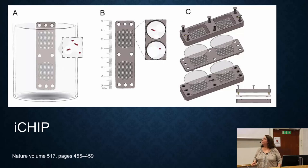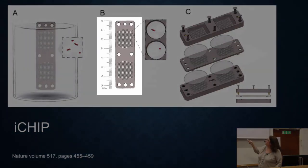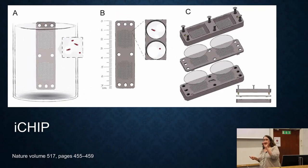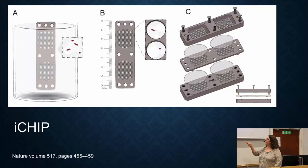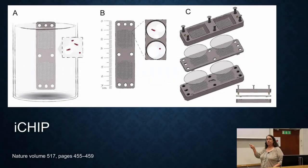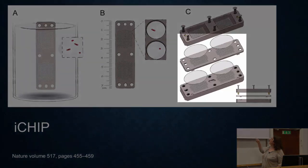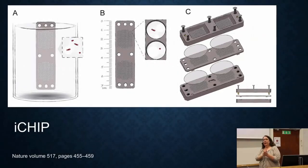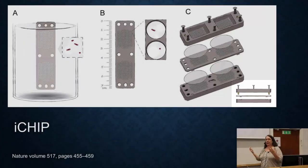This is called the I-chip. It's very small — about six to eight centimeters long — and it has a lot of little holes. You take a sample of bacteria from anywhere, the ocean or the soil, dilute it so that on average only one bacterium goes into each hole. Then you place membranes on top and bottom that allow nutrients in and out but trap the bacteria. The device is screwed together — this is the I-chip.